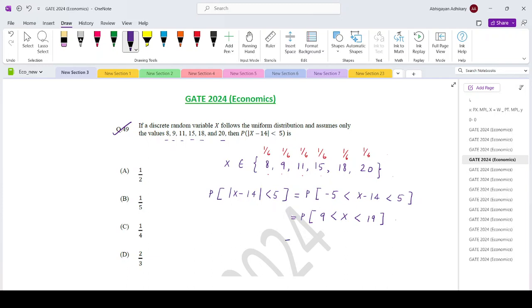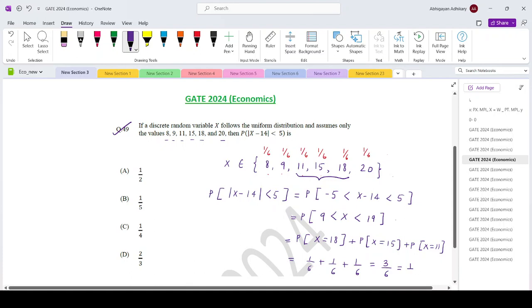So that is probability that between 9 and 19 we have 3 numbers. So x equals to 18 plus probability x equals to 15 plus probability x equals to 11. So 1 by 6 plus 1 by 6 plus 1 by 6 equals 3 by 6 which is 1 by 2.